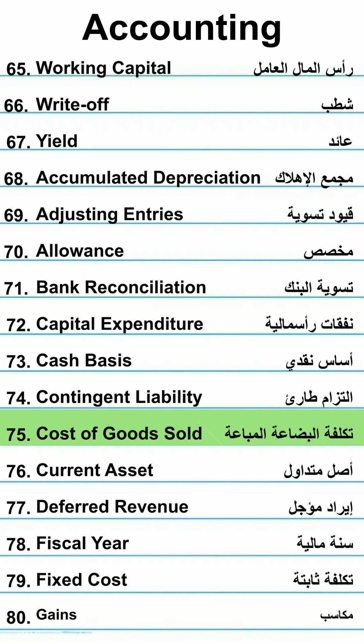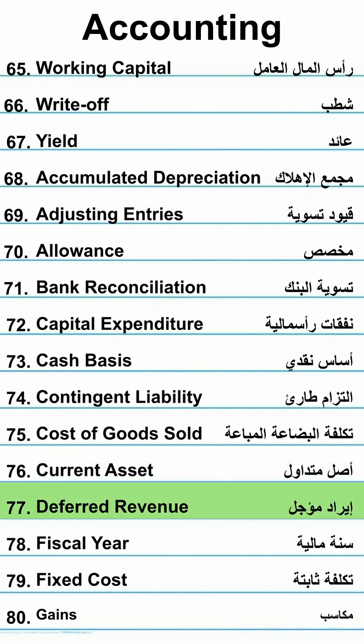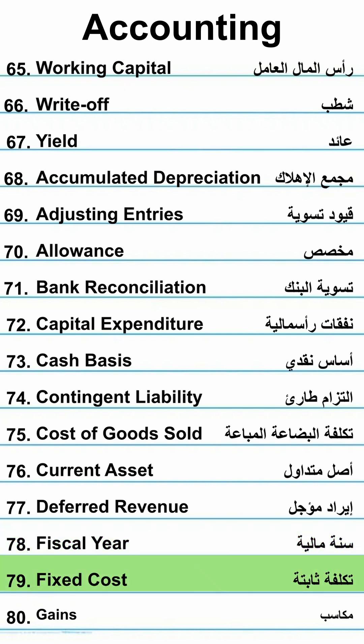Cost of goods sold — Ticlifat al-boda'a al-mubah'a. Current asset — Asal Mutadaul. Deferred revenue — Eirad Mu'Adjal. Fiscal year — Sana Maliya. Fixed cost.